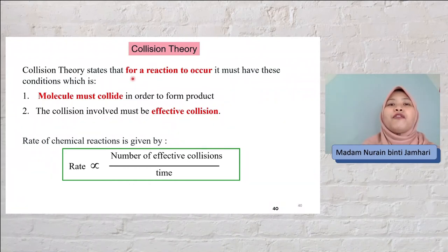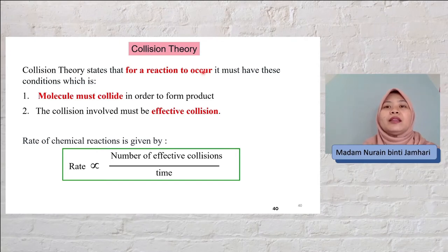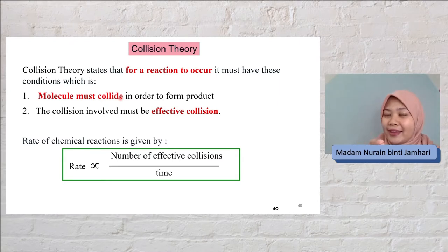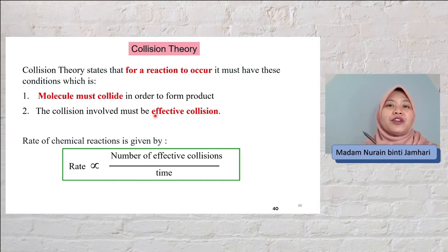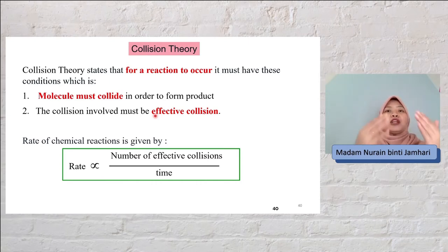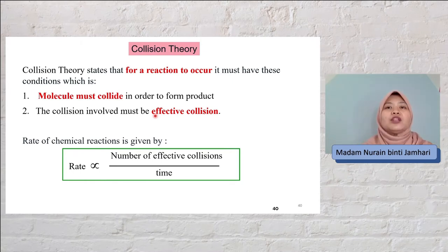Collision theory states that for a reaction to occur, they must meet these two conditions. The first one is the molecule must collide and the collision must be an effective collision. There are two conditions that the molecule must fulfill for the reaction to occur, for them to change the reactant into product.